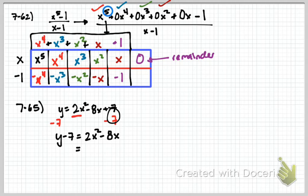Y minus 7 equals 2x squared minus 8x. How do we deal with this 2? Well, what we're going to do is we're going to pull out a 2 here. By pulling out a 2, now we're able to have x squared minus 8x plus blank.